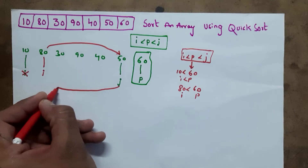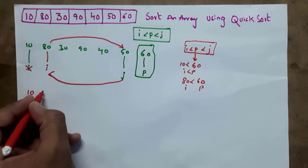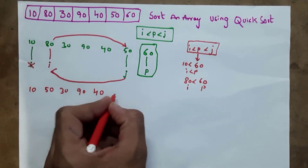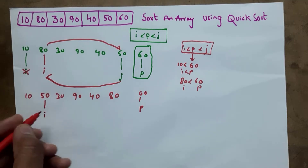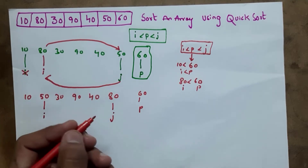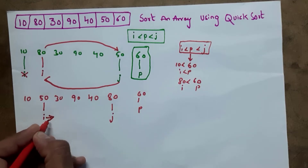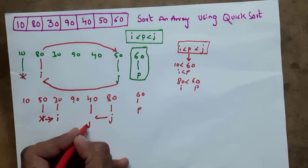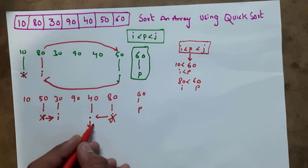If condition is false, we need to swap i and j elements — interchange i and j. So in place of 80 we write 50, and in place of 50 we write 80: array becomes 10, 50, 30, 90, 40, 80, 60. Now i is 50 and j is 80. After swapping, we move i one position forward and j one position backward.